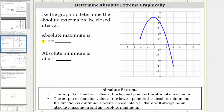To determine the absolute maximum, we locate the highest point of the function over this closed interval, which is this point here. Notice how the ordered pair for this point is negative one comma five. Because five is the function value or y value, five is the absolute maximum, which occurs at x equals negative one.